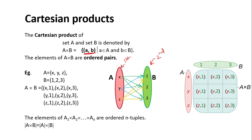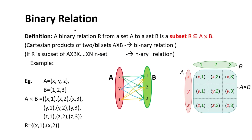The elements of A1 cross A2 cross so on are ordered n-tuples. If you are performing the operation on only two sets, it is called binary Cartesian product. A binary relation R from set A to set B — denoted ARB — is a subset of A cross B, a subset of the Cartesian product. We call it binary because we are performing Cartesian product on two sets. If performing on n sets, it will be an n-ary relation.